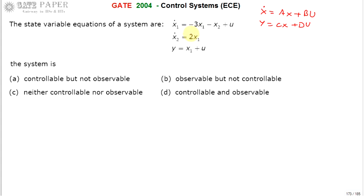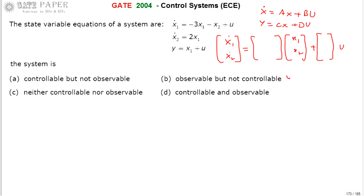Then we can go for the controllability check and observability check. So x̄˙ equals [x1̄˙, x2̄˙], consisting of the A matrix followed by x = [x1, x2] plus B matrix with U. Now x1̄˙ = −3x1 − x2, so A has [−3, −1] and the B term is +U, meaning 1. Next, x2̄˙ = 2x1, so the second row of A is [2, 0] and B has 0.